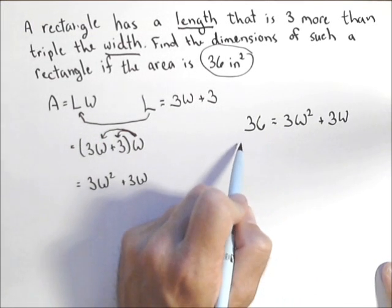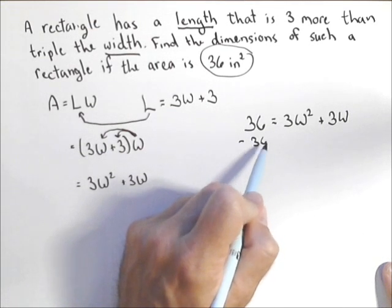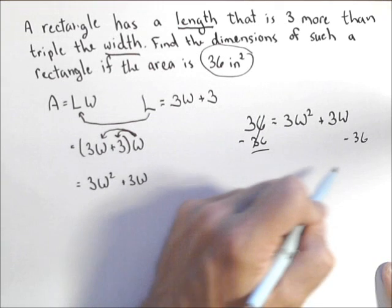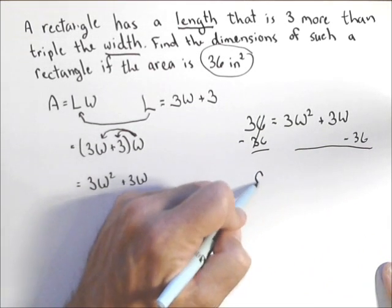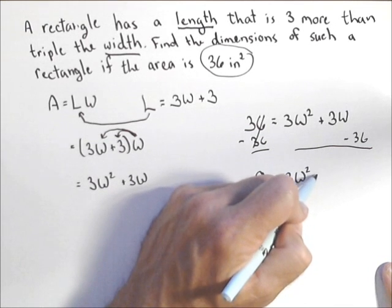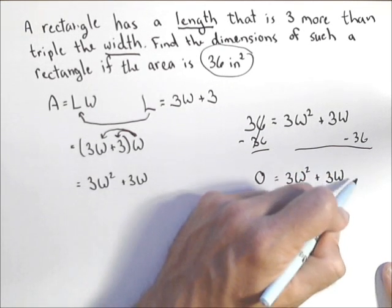So let's see what happens. What we'll do is we'll get it equal to zero. So subtract 36 from both sides. So those cancel. So we have zero equals three W squared plus three W minus 36.